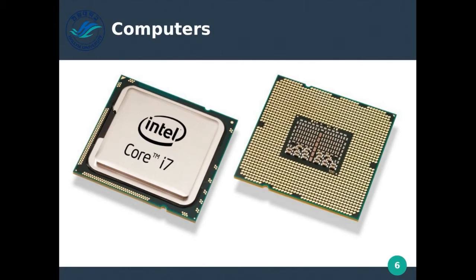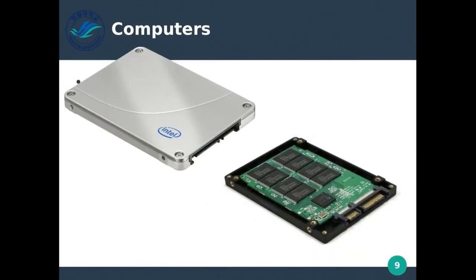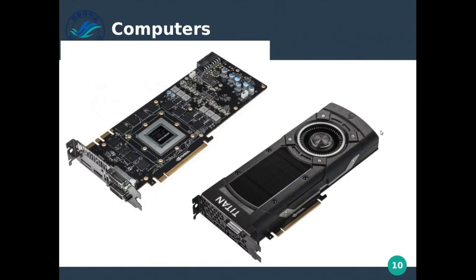Processors are quick but used for general-purpose processing, meaning any problem they get they should be able to handle. Now video cards that we put inside an expansion slot have their own processor inside. This is a video card with a case, and without the case you can see the processor in the middle. This processor is specifically designed to do math for video.